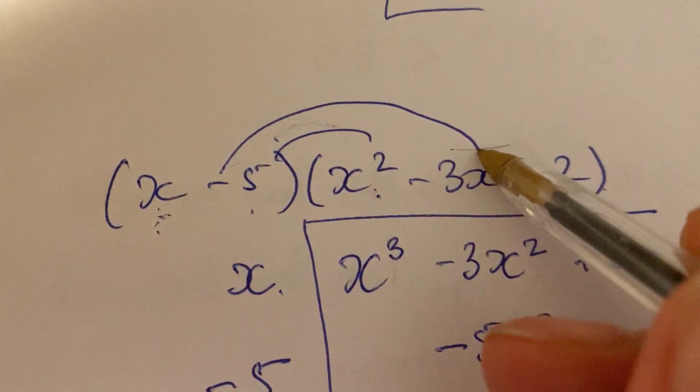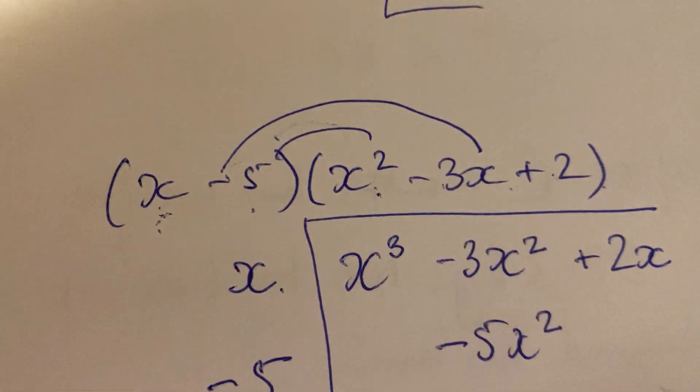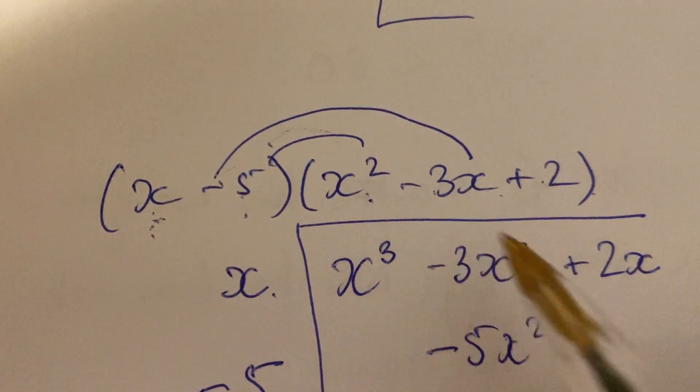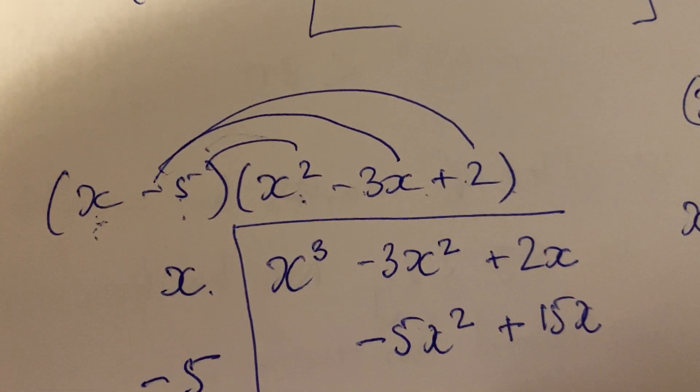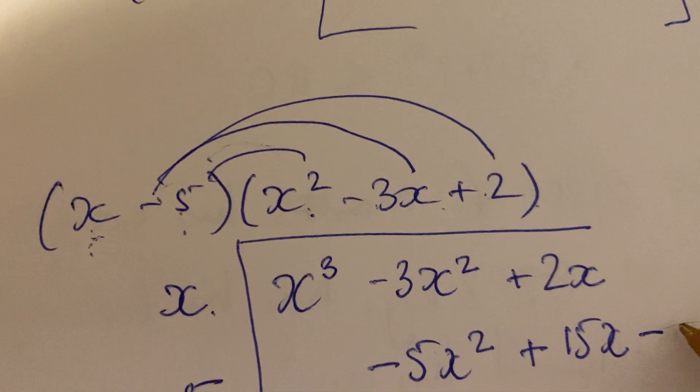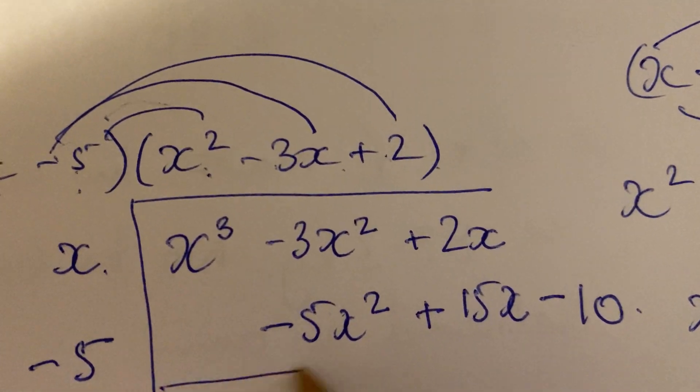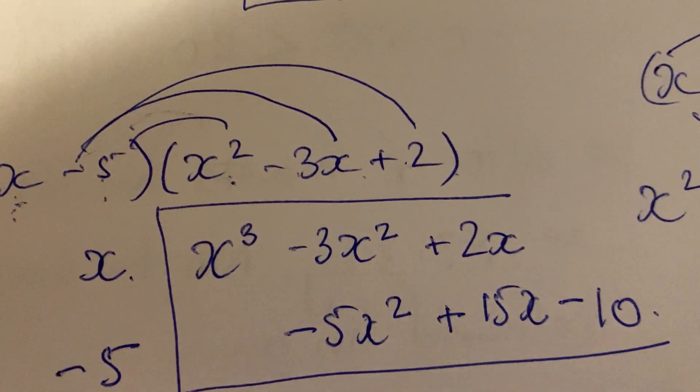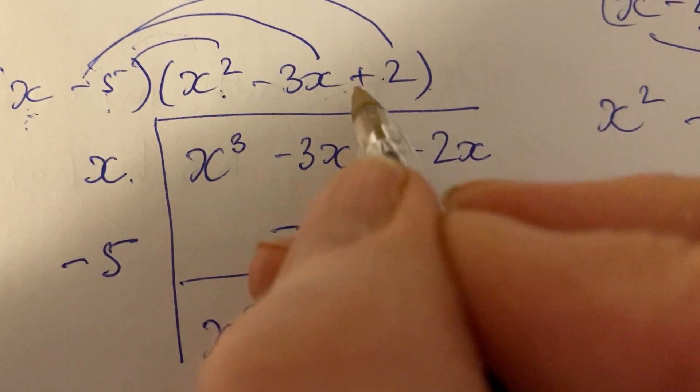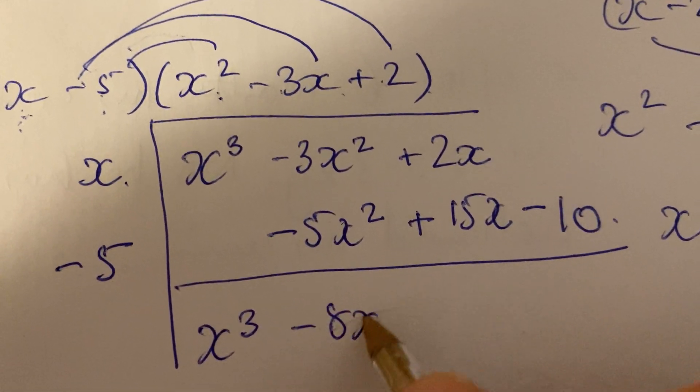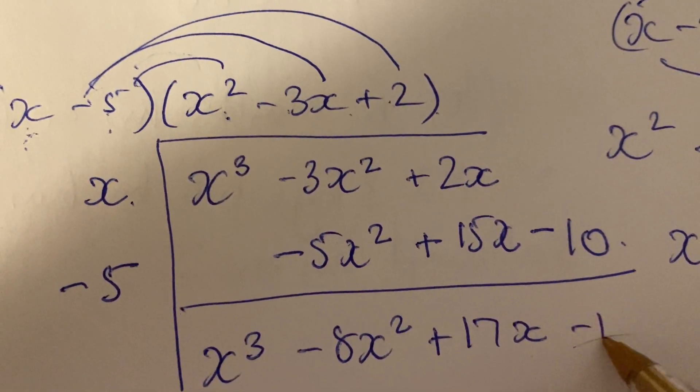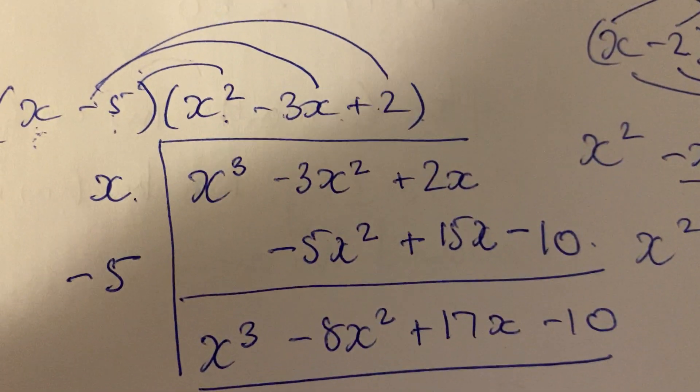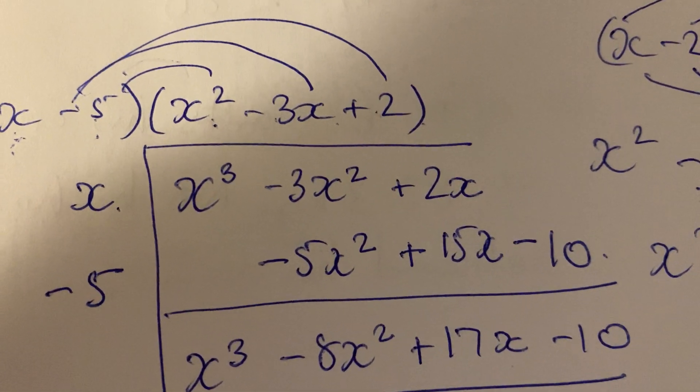Now I'm going to times all of this by -5. -5 times x² is -5x², and I'll put the answer underneath like column addition. Then -5 times -3x, minus times minus is plus, so that's +15x. Then -5 times 2 is -10. Now add the columns together: x³, -3-5 is -8x², 2+15 is 17x, minus 10. There you get it: x³-8x²+17x-10. It's a really neat way of doing it. Definitely a question like this in the exam.